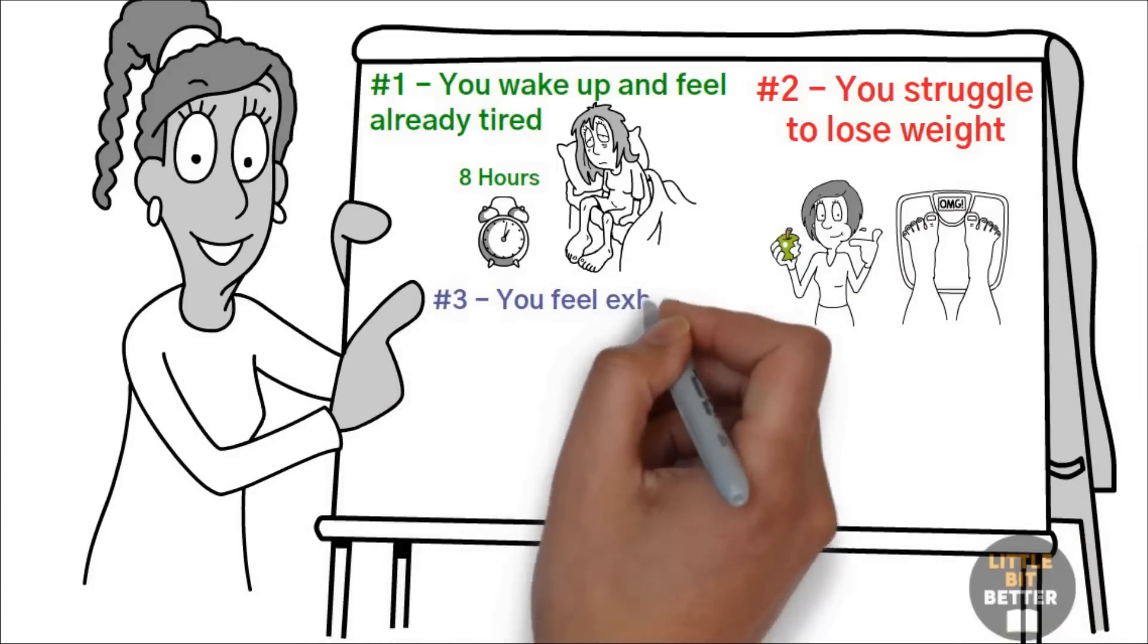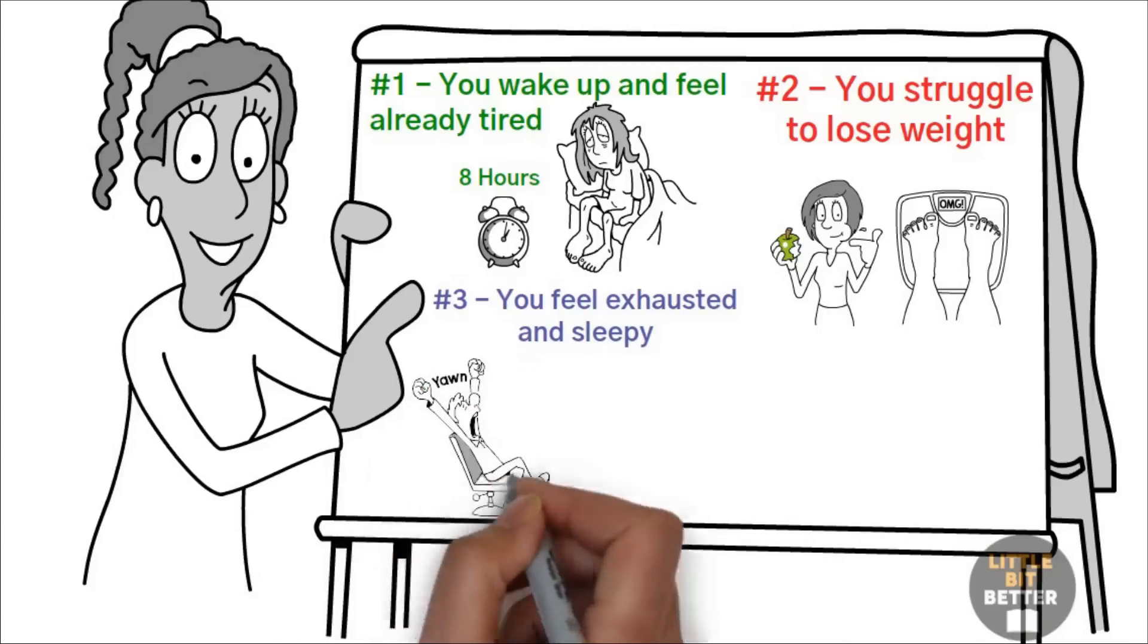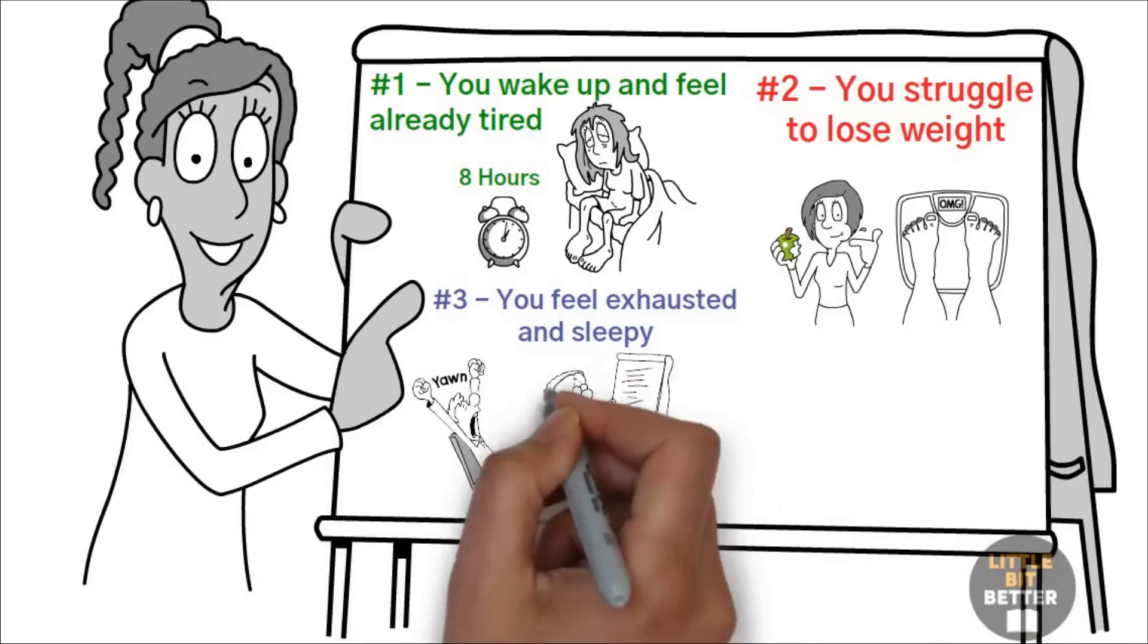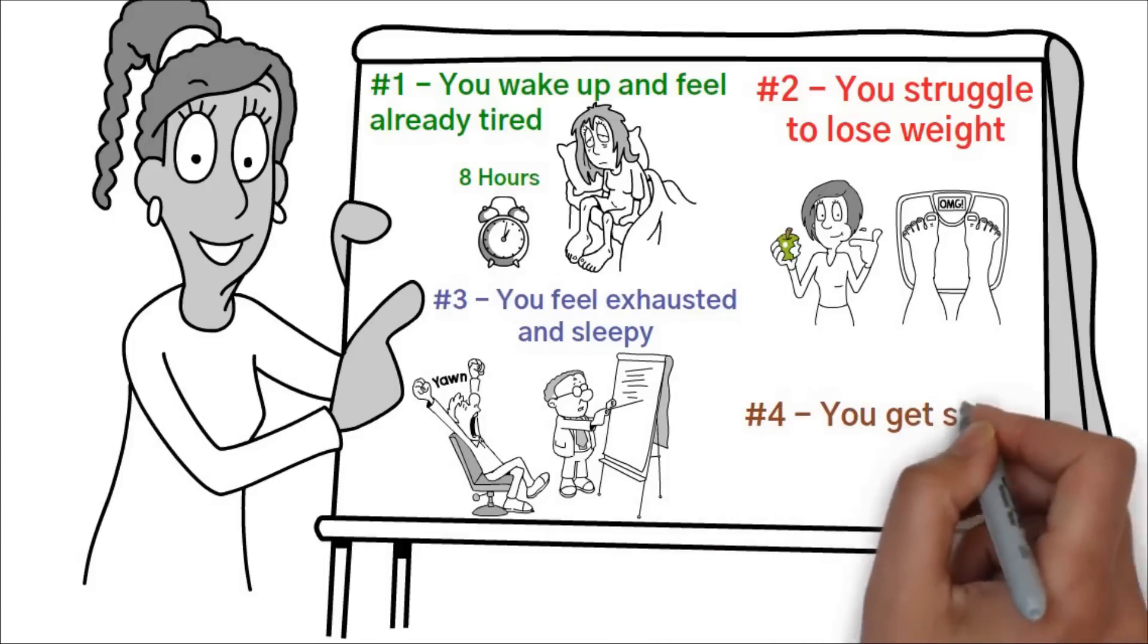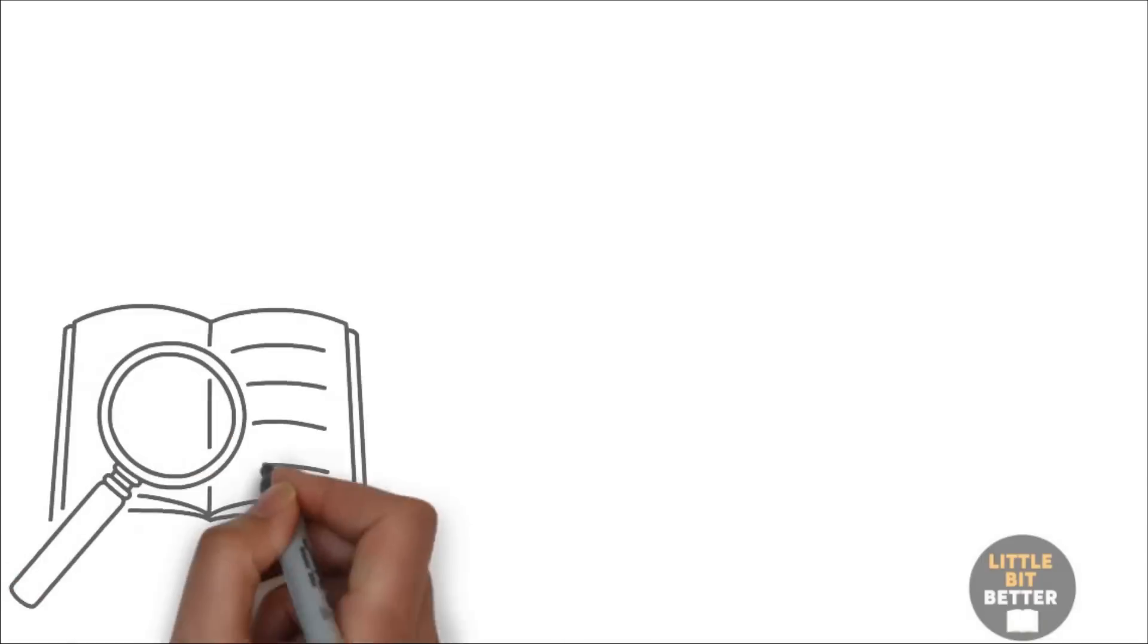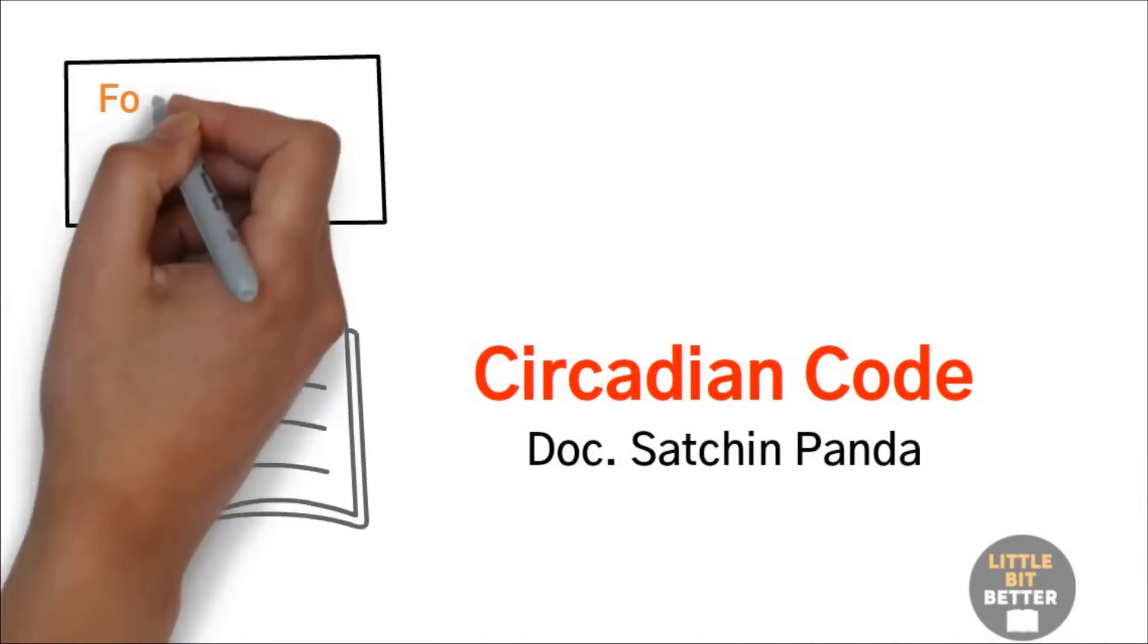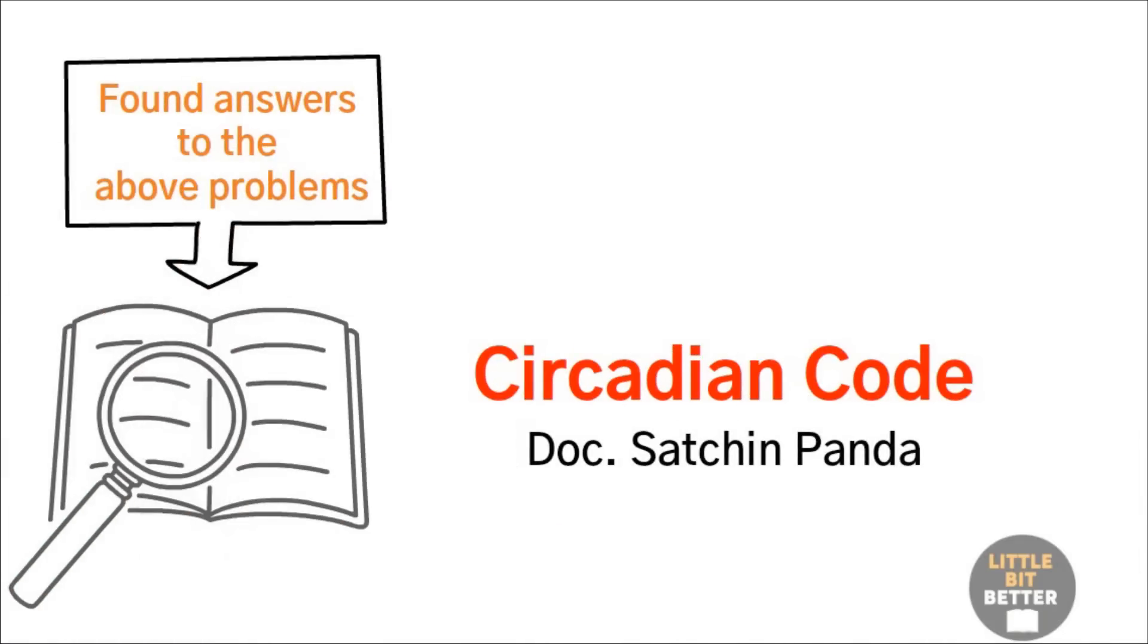Number three, you feel exhausted and sleepy. You don't have the energy for anything during the day, and when it's evening, you can't fall asleep. Number four, you get sick very often. Recently, I read a book called Circadian Code by Dr. Sachin Panda and found answers to the above problems. So let's get started.